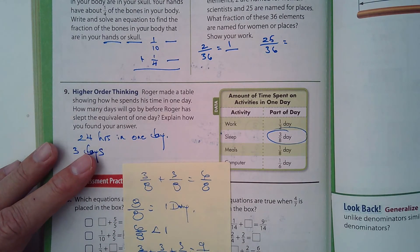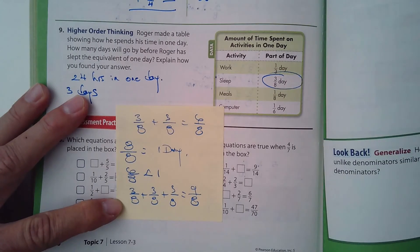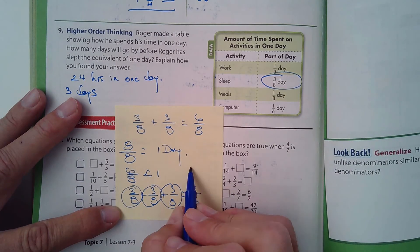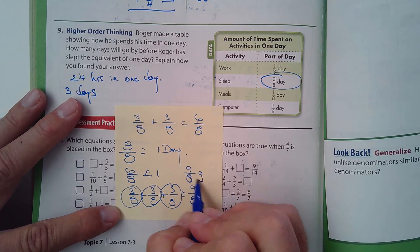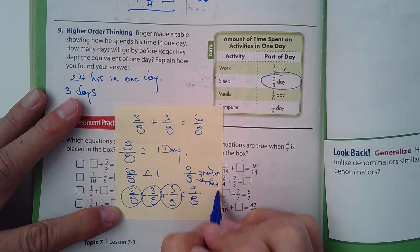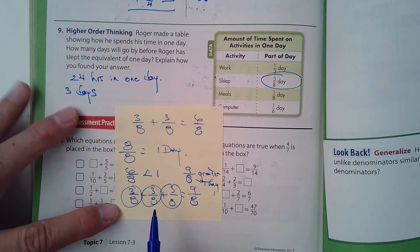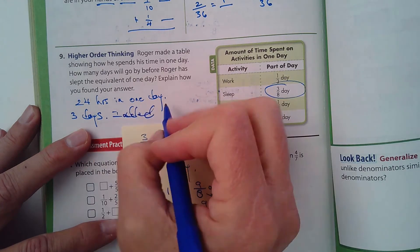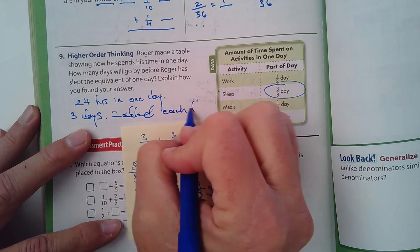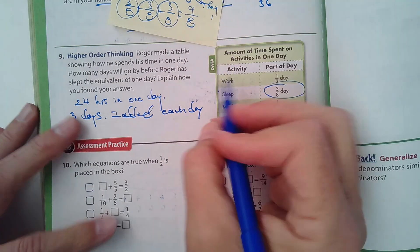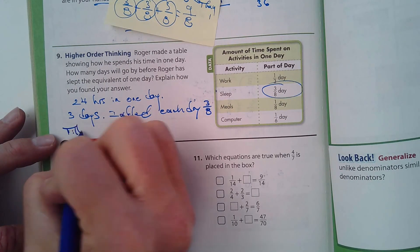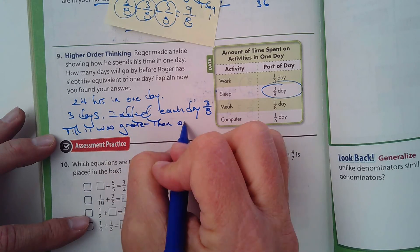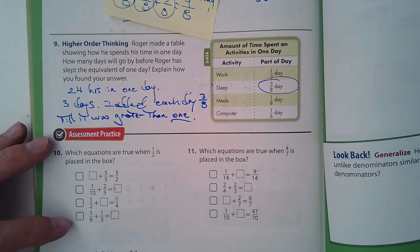So I think the answer is pretty simple. The answer would be 3 days, because each day—there's one day, there's two days, there's three days—so finally at 9/8, nine-eighths is greater than one. So three days would go by. Each day I added 3/8, and then it was greater than one or one day. Hopefully that made sense to you guys.